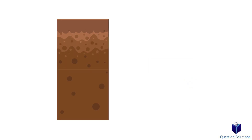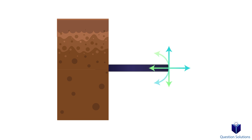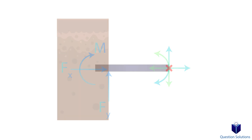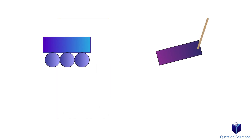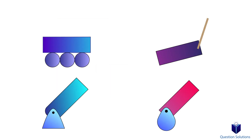However, imagine we fix our beam to the ground or to a wall. Now it can't move in the horizontal direction or the vertical direction, and it also cannot rotate. In this case, we'd have two reactions — one in the x axis and another in the y axis — and we would also have a couple moment because rotation cannot occur. An opposite couple moment must be developed so that the bar doesn't rotate due to the moments created by the forces. Your textbooks will contain a list of these supports and what type of reactions they can have.